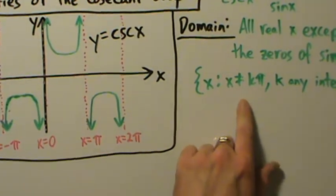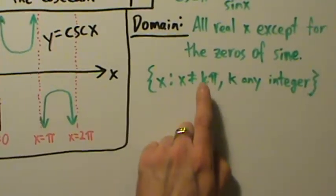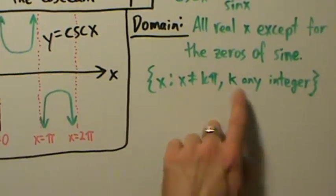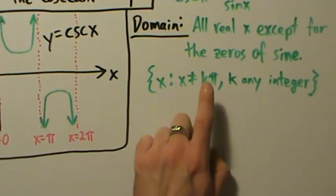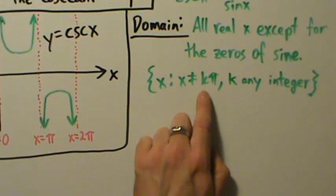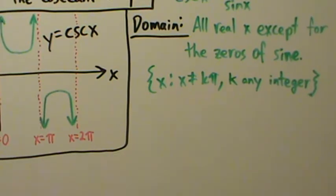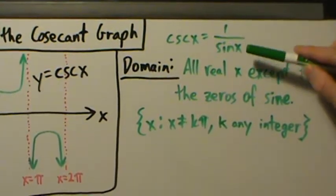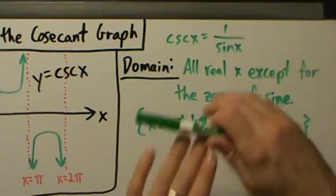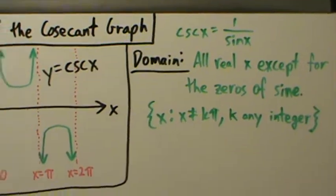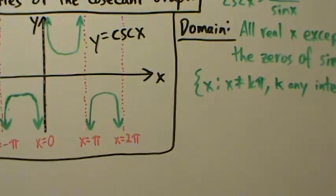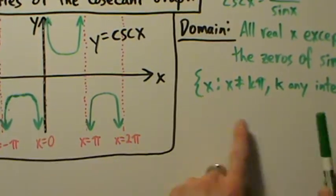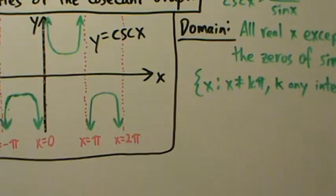At these values of x — at kπ where k is any integer — sine of x equals zero. And if sine is zero, you're dividing by zero, which is not allowed, so cosecant will not be defined there. So the domain is everything except those values of x.